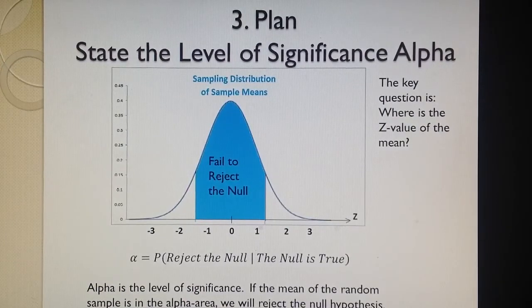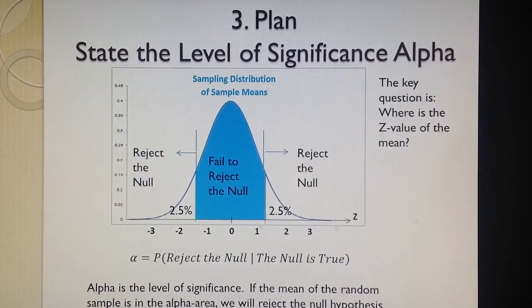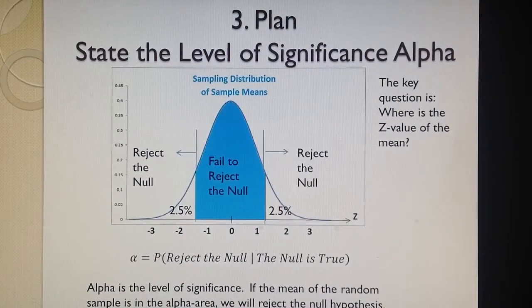But it may be even true, but I will reject it. Because this alpha level, the white area on this picture, is a very small probability. Now, in education, this probability should be less than 5%. What does it mean? It means that to the left and to the right, we will have 2.5% error eventually. But I will reject the null hypothesis if the mean of randomly selected sample, translated into Z value...